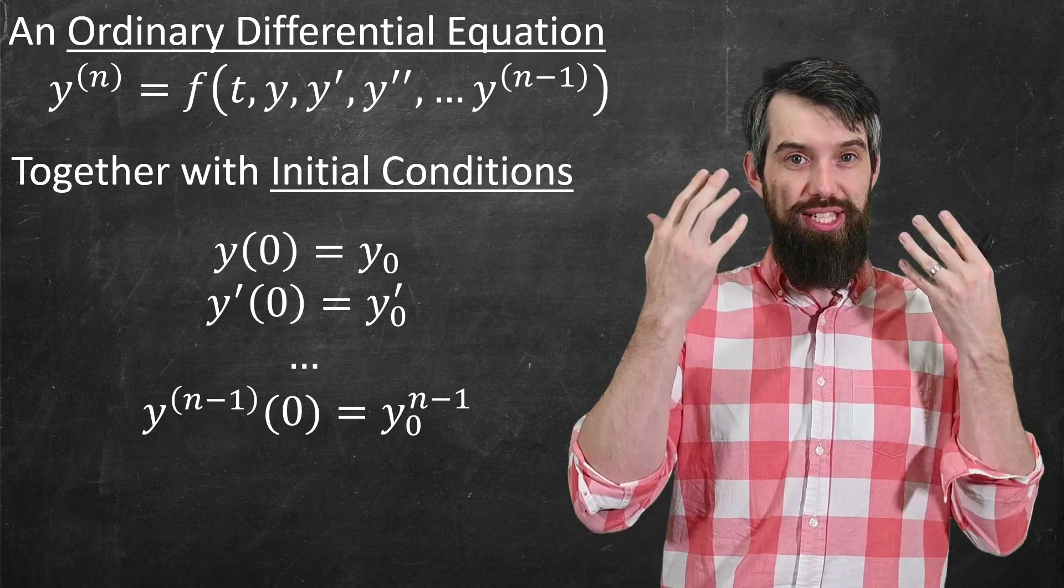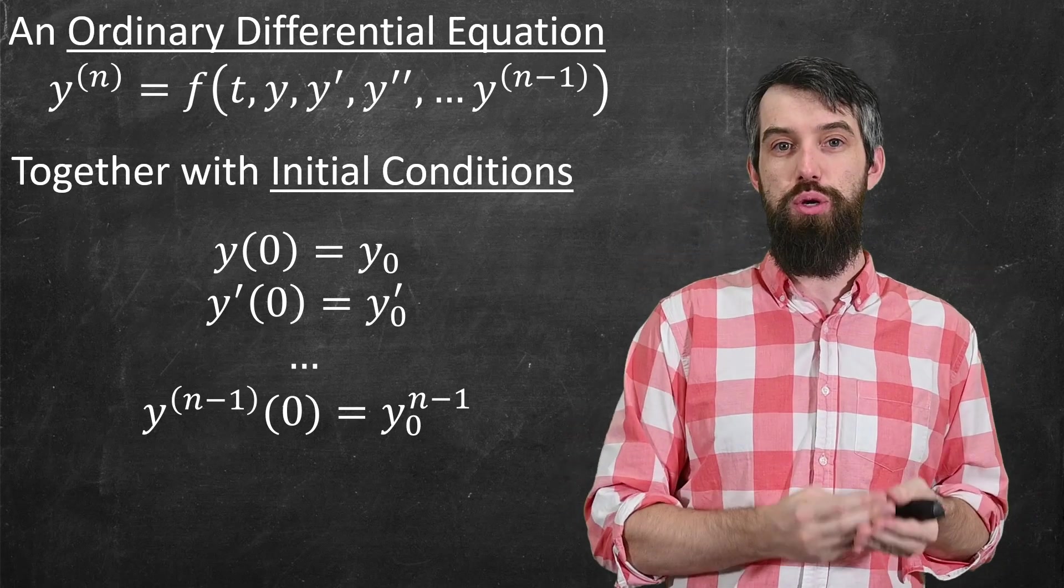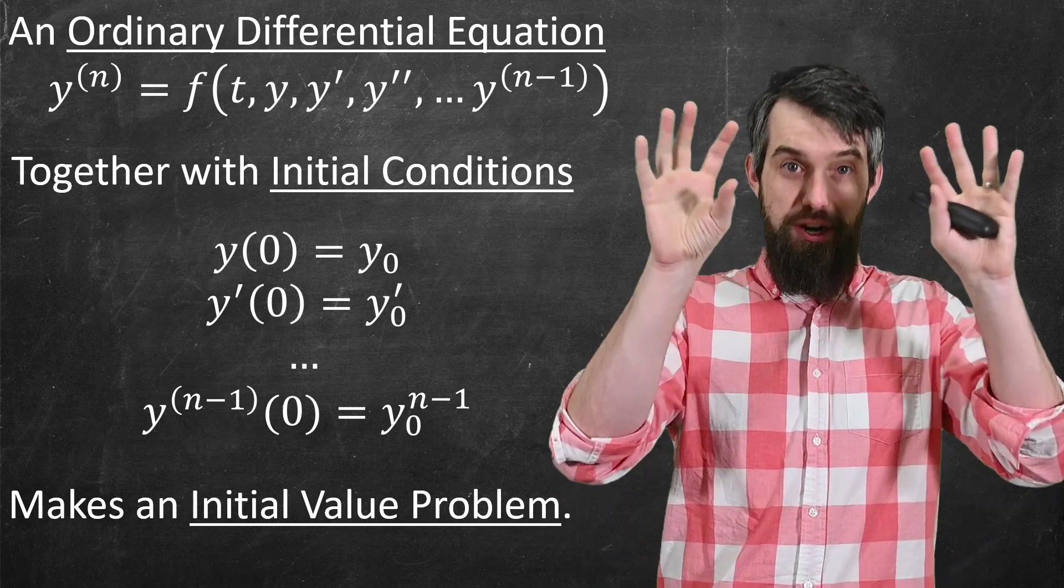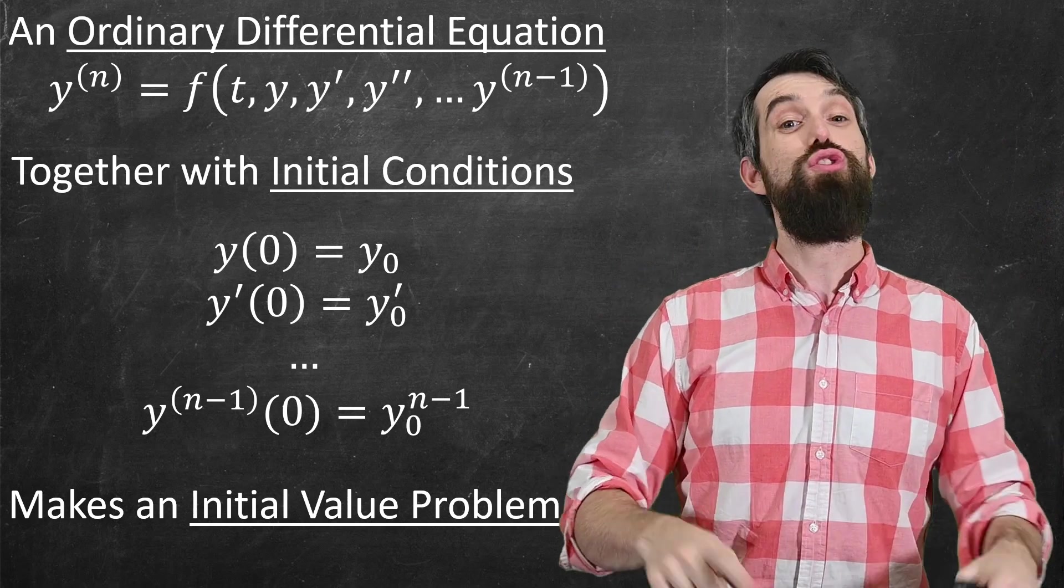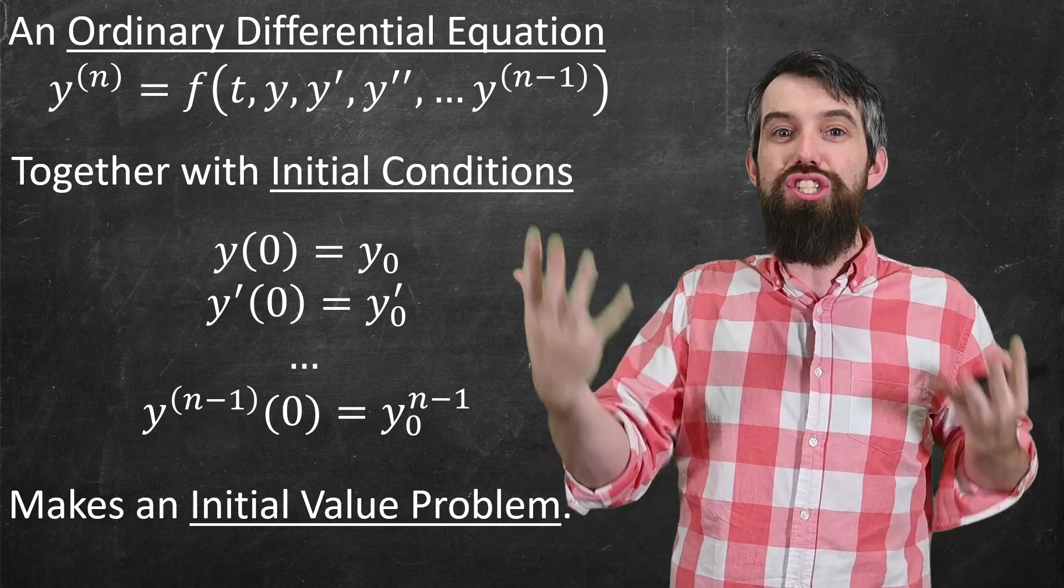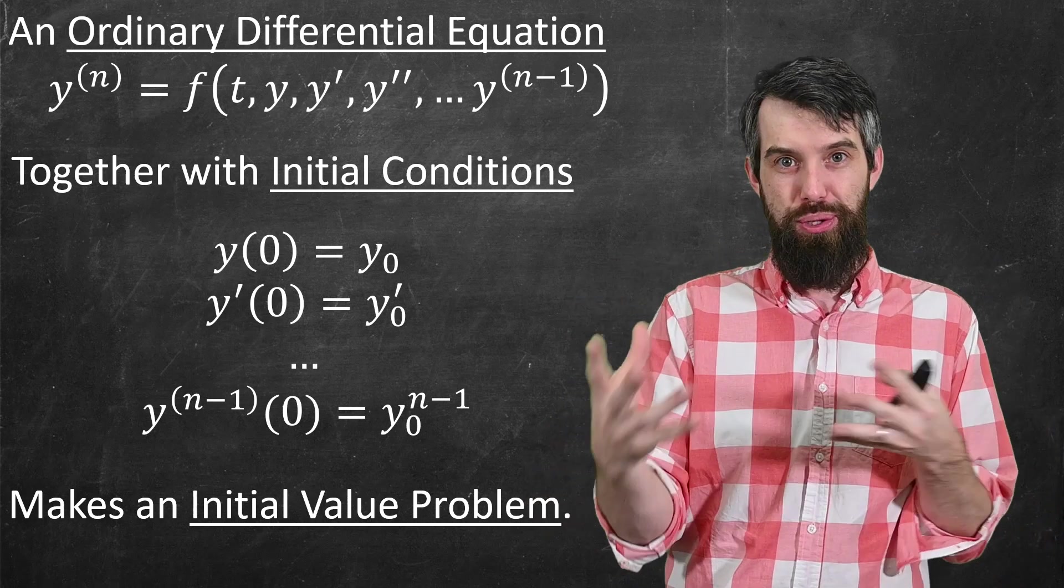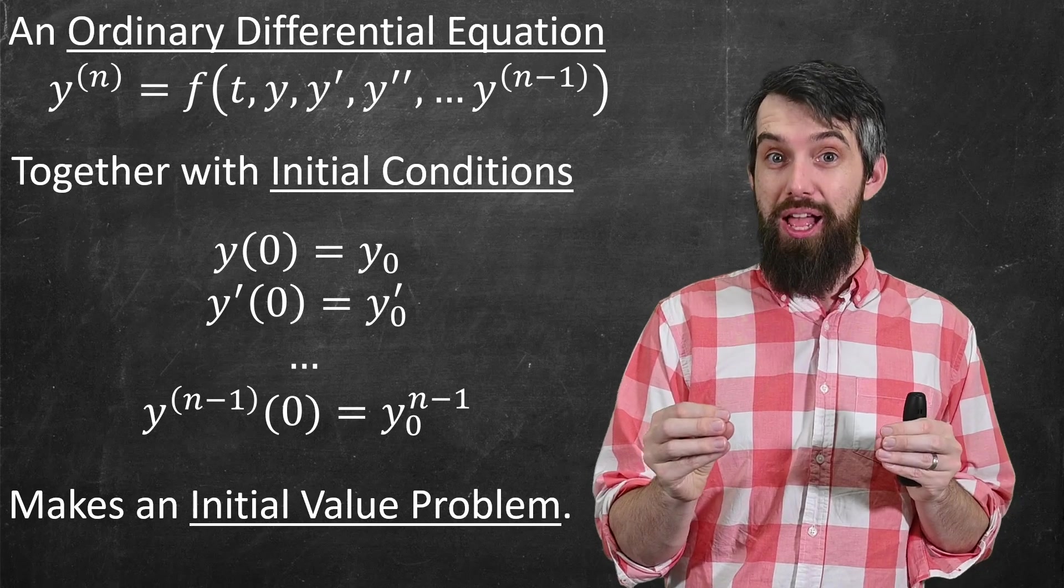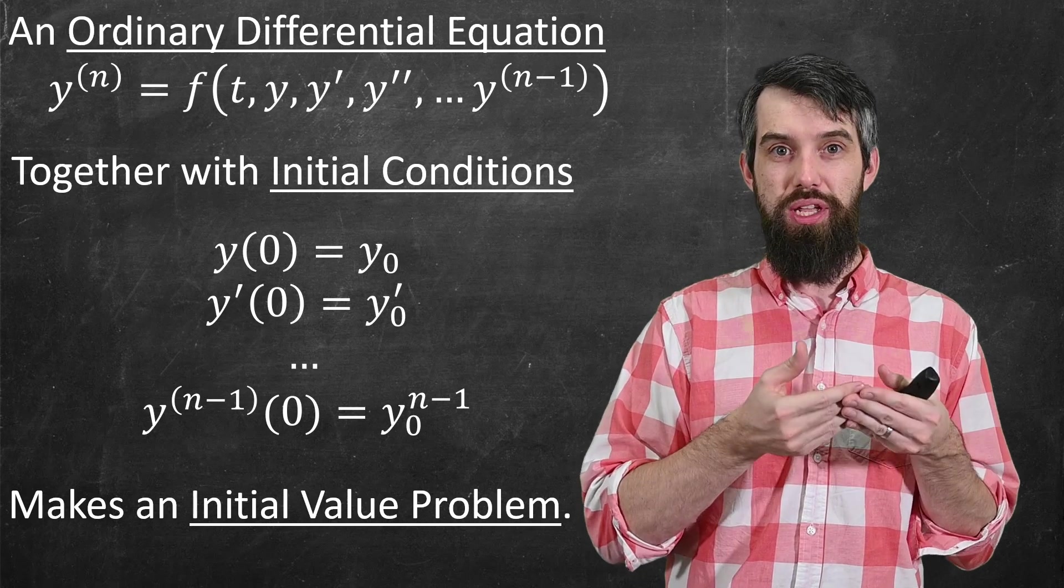So I have these initial conditions. I just tell you the values of the function and its derivatives at time t equal to 0. And collectively, that is known as an initial value problem, a differential equation together with initial conditions. And to solve an initial value problem, you're trying to find a solution that is not a general solution, doesn't have constants in it, doesn't express all the possible solutions to it. Now we're solving for the specific solution that not only satisfies the differential equation, but also satisfies all of these initial conditions.